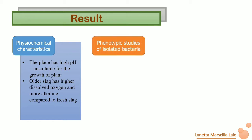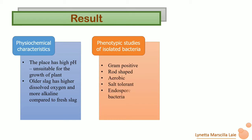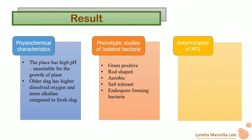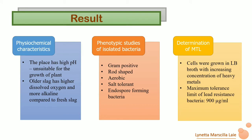Next is the phenotypic study of the isolated bacteria. The phenotypic study shows that the isolated bacteria are Gram-positive in shape, aerobic, salt-tolerant, and endospore-forming bacteria. Lastly, for the determination of maximum tolerance limit, cells were grown in broth with increasing concentrations of heavy metals and growth was observed. The maximum tolerance limit of lead-resistant bacteria was found to be 100 mcg per milliliter.